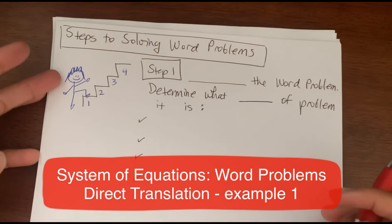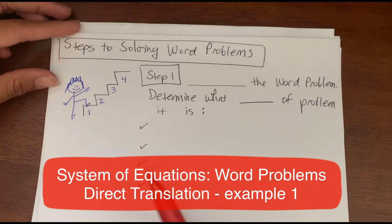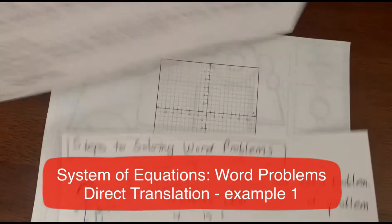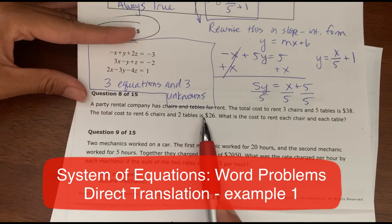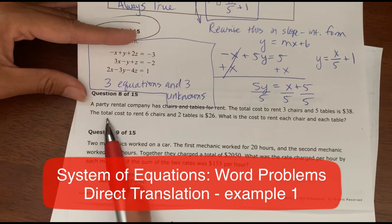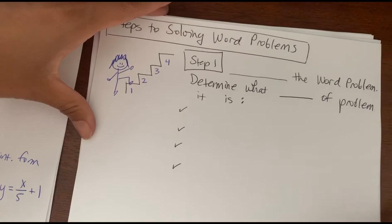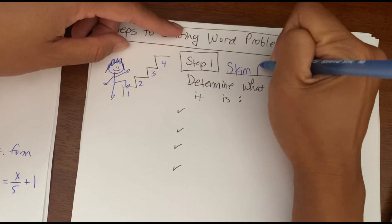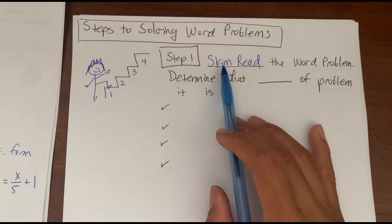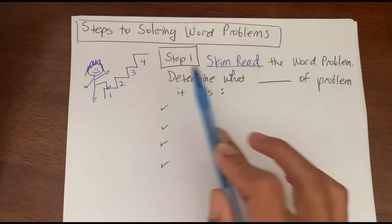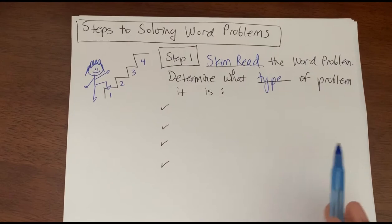In this next problem we're going to talk about solving word problems. Here I have four steps to take in order to solve a word problem. The first thing you want to do is skim read the word problem. A lot of students do not read the problem, so make sure you read it — just skim it to get an idea of what type of problem it is, ignoring the numbers for now.